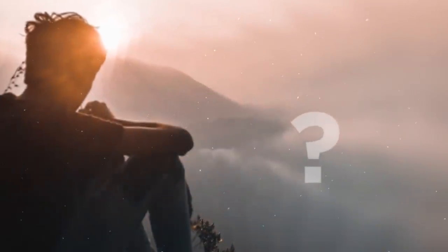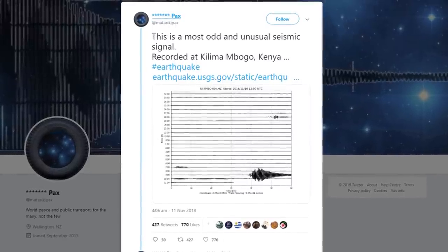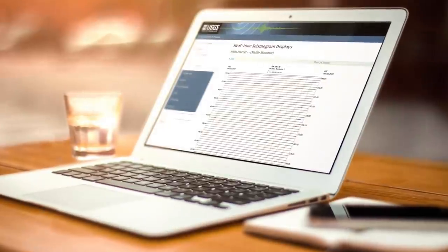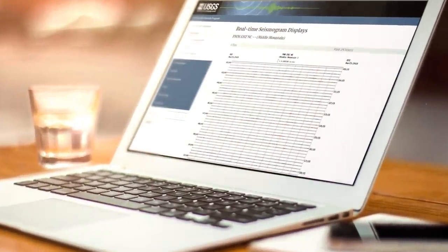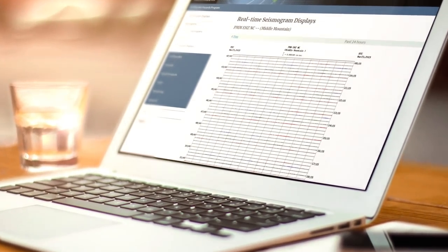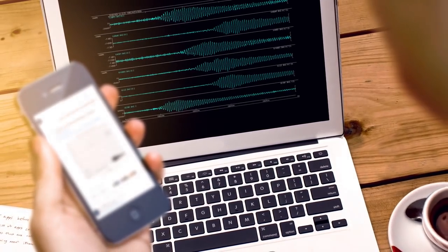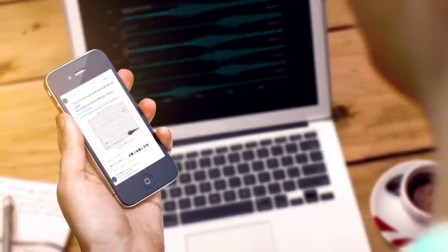So how do we know they even happened? Well, it all came down to one very observant seismologist, and Twitter user, at Matariki Pax. One day, as he partook in the extreme sport of watching the US Geological Survey's real-time seismogram displays, he noticed something a bit odd about the zigzag patterns he was witnessing. He was also curious as to why nobody else was noticing them. To see if anyone else had any thoughts on the peculiar waves, he took to Twitter and set off his own earth-shattering chain of events.